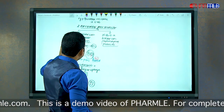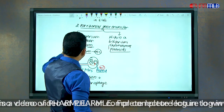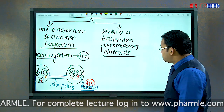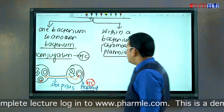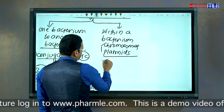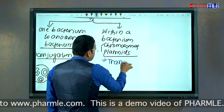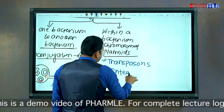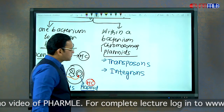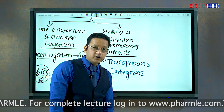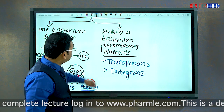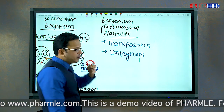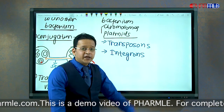Now we will discuss resistance transfer that takes place within a bacterium, between chromosomes and plasmids. This transfer within a bacterium requires two things: transposomes and integrons. These are two structures present in both the chromosome and the plasmid of the bacteria, responsible for gene transfer between them.